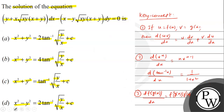Let's check which option this matches. On the left-hand side we have x² + y², and it equals 4·tan⁻¹(√(y/x)) + c — that is option B, which is our correct answer. So option B is the final answer. I hope you understood it well. Best of luck!